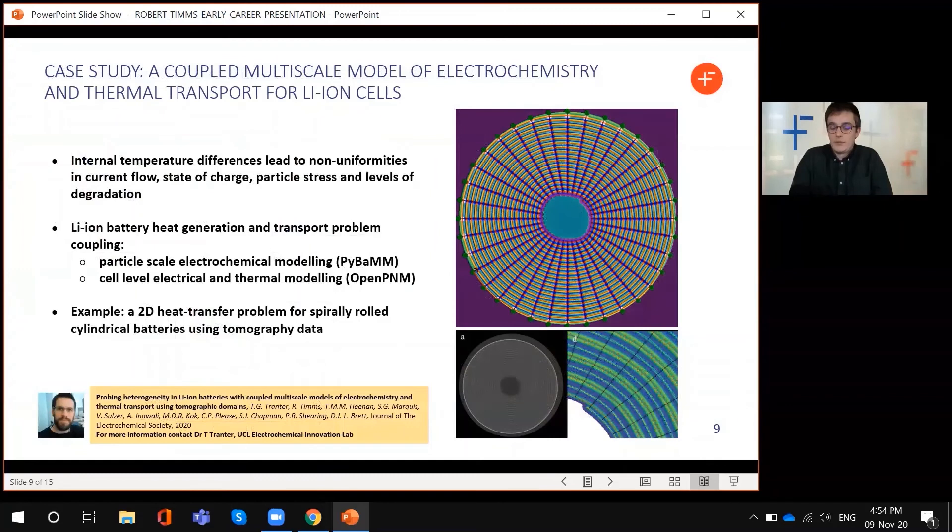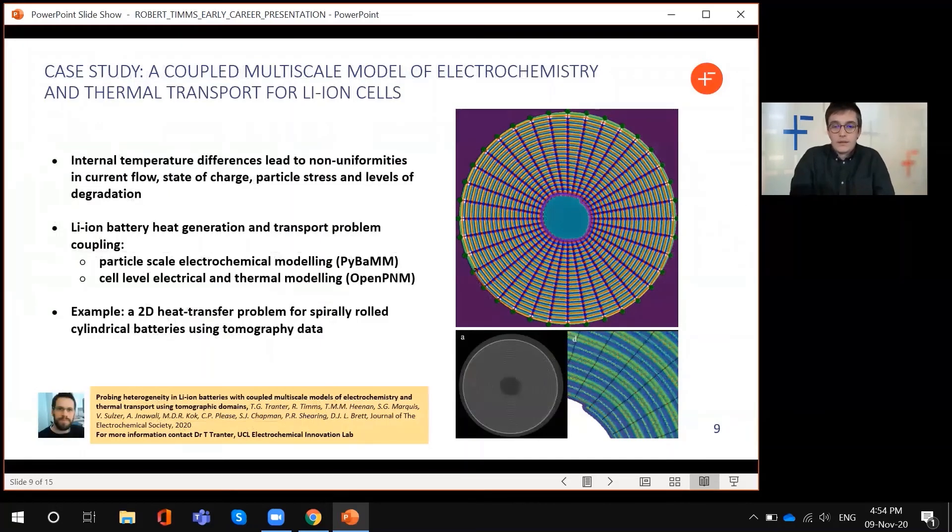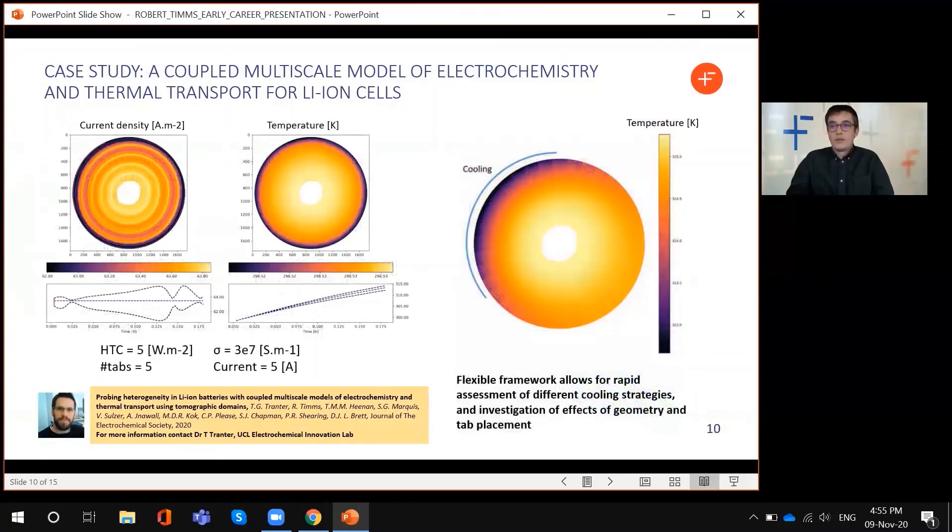This next case study is an example of the extensibility of PyBAMM. In this work, we tried to bridge the length scale gap between the single electrode scale and the whole jelly roll scale. A tomography image was taken, shown in the bottom figure there labelled A, and this tomography image of a jelly roll cell was used to construct an equivalent circuit model representation to describe charge and heat transport on the scale of the jelly roll. Then local electrochemistry was modelled in PyBAMM. These two software packages are coupled together and this lets you model things or answer questions like, how does the macroscopic geometry of my cell affect performance? Things like, how many tabs should I place? Where should I place them? Or what happens if I only cool one side? It brings you back to answering questions like, how will this temperature variation or variation in current density affect degradation?